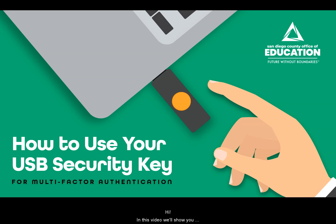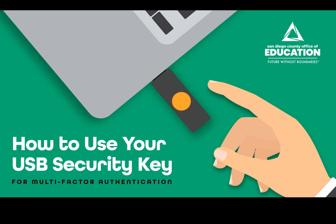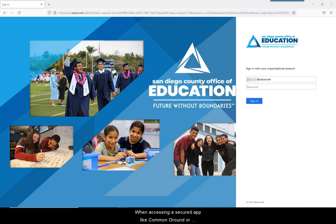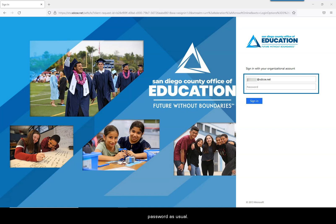In this video, we'll show you how to use your USB security key for multi-factor authentication on your SDCOE-issued computer. When accessing a secured app like Common Ground or Outlook, first enter your username and password as usual.